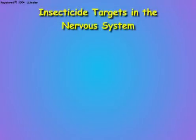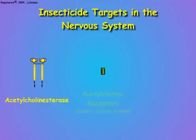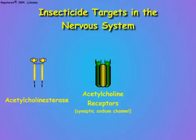Insecticides destroy the central nervous system by affecting three molecular targets: the enzyme acetylcholinesterase, acetylcholine receptors of the synaptic sodium channels, and axonal sodium channels.